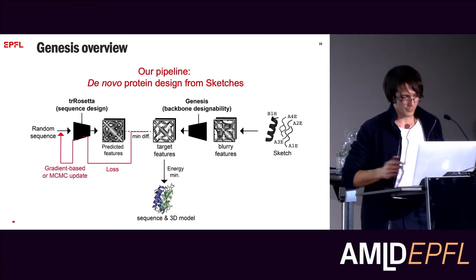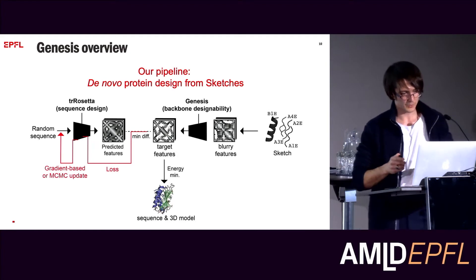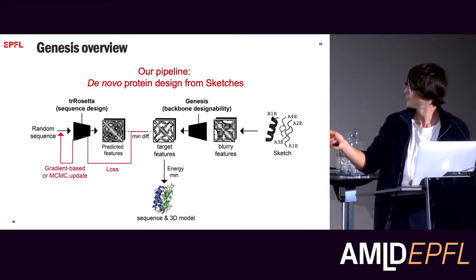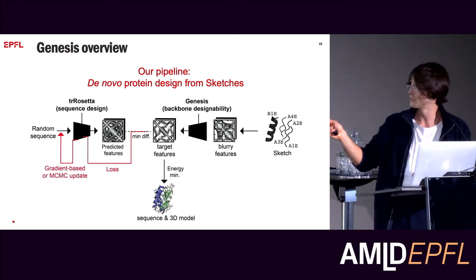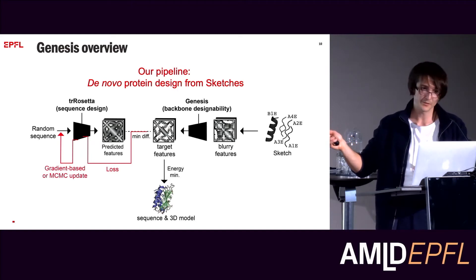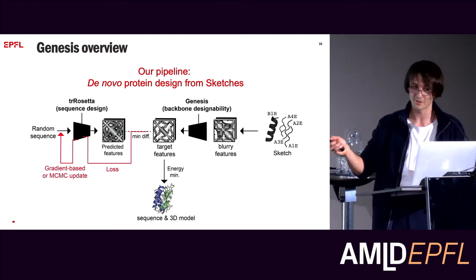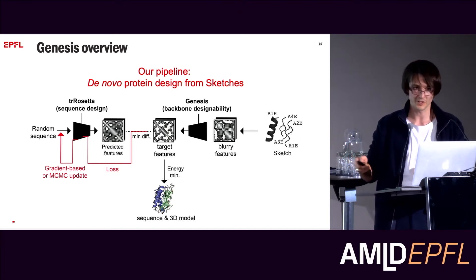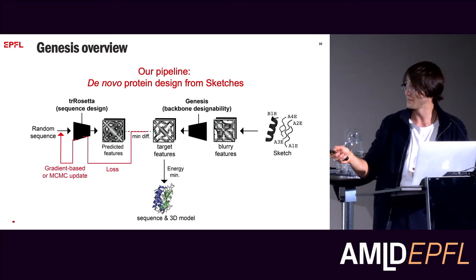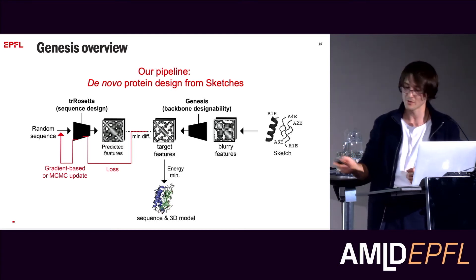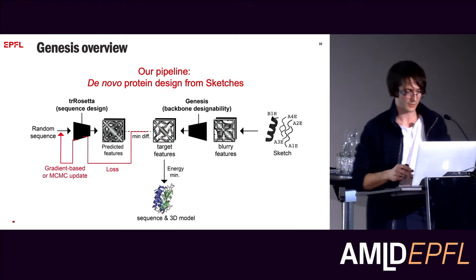The full pipeline to generate new protein sequences looks like this: you draft the shape of your protein by hand if you want, derive very noisy features, use Genesis to denoise those feature maps and make them more physically realistic, and then use TR Rosetta — a structure prediction network — to design sequences for those target features. What you get out are sequences and a full atomistic model.